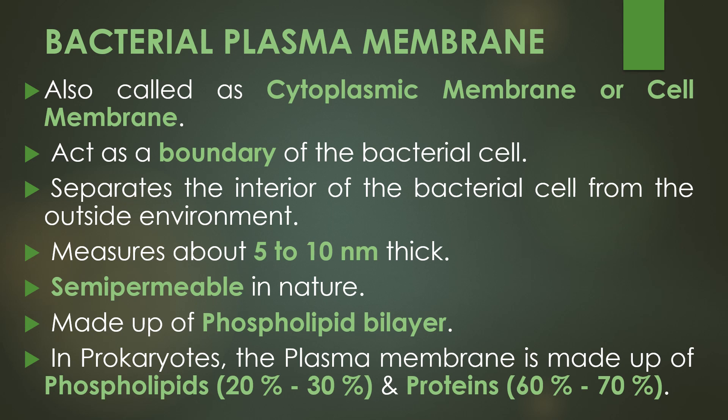The major component in the bacterial plasma membrane is the phospholipid, and the plasma membrane is made up of the phospholipid bilayer. In prokaryotes, the plasma membrane is made up of phospholipids at 20 to 30 percentage and proteins at 60 to 70 percentage.